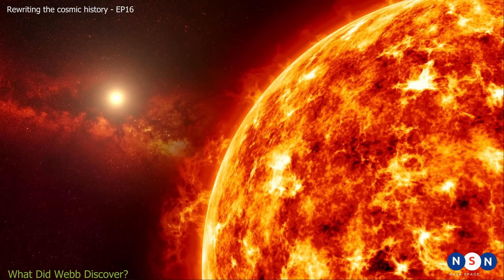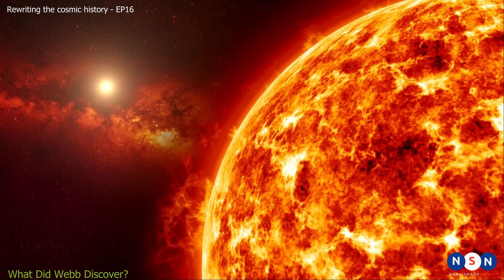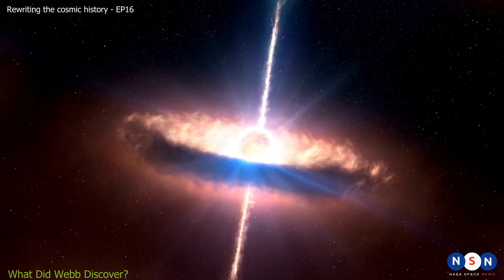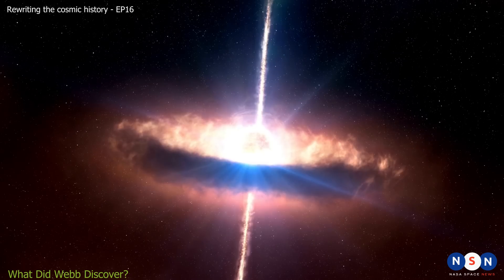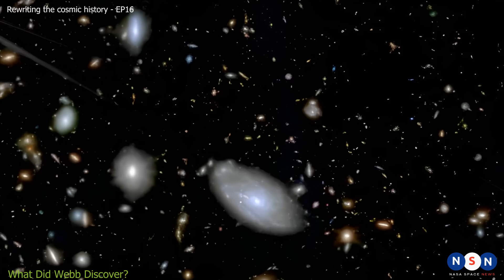One possibility is that these galaxies had very hot and massive stars that burned their fuel quickly and released large amounts of radiation. Another possibility is that these galaxies had supermassive black holes at their centers, that accreted gas and dust and emitted powerful jets and flares.